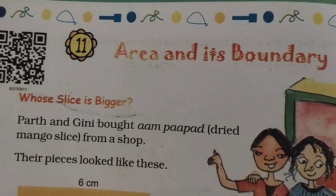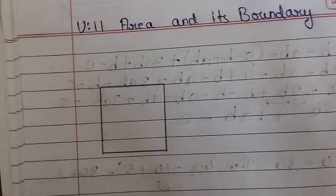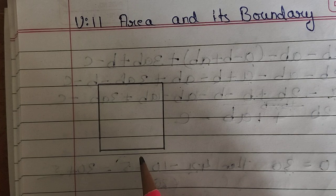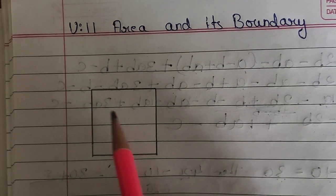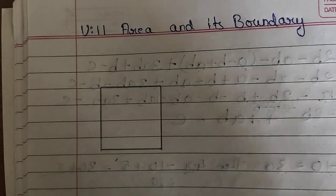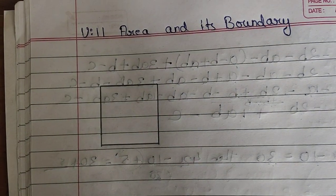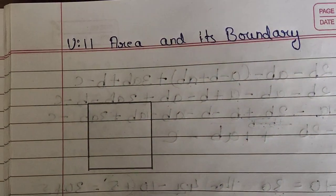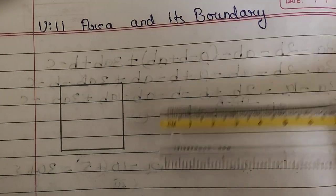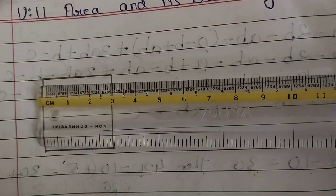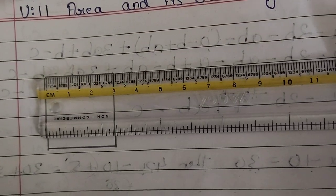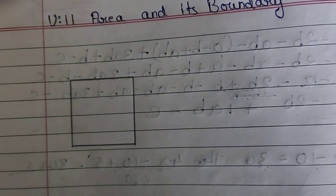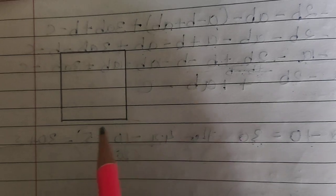Open your textbook and your notebook. I have drawn a square. A square has four sides and all four sides of a square are the same. If I measure the square, the length here is three centimeters, so all its sides will also be three centimeters. This is the length — it is three centimeters.